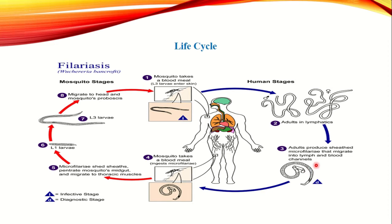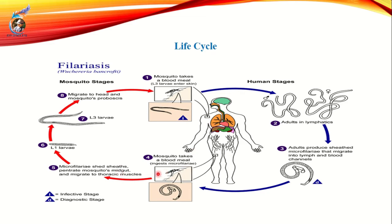The microfilariae travel into the blood. If a mosquito bites an infected person, the mosquito ingests the microfilariae. Further development takes place inside the mosquito, where the larvae develop through first and third stages. When the mosquito bites another person, the larvae are transferred to the next host. So it takes two hosts to complete the life cycle.